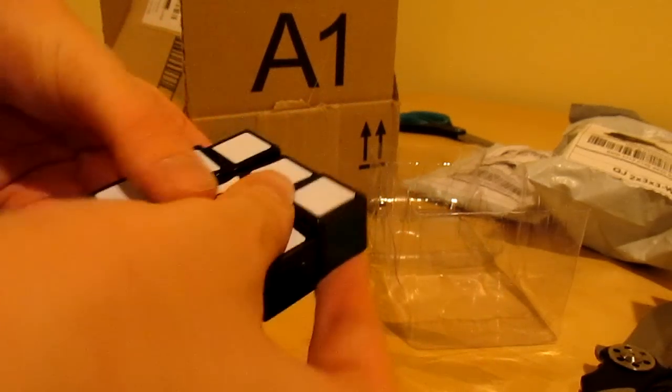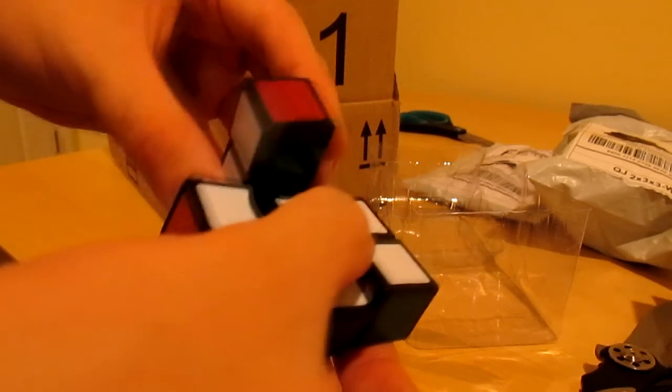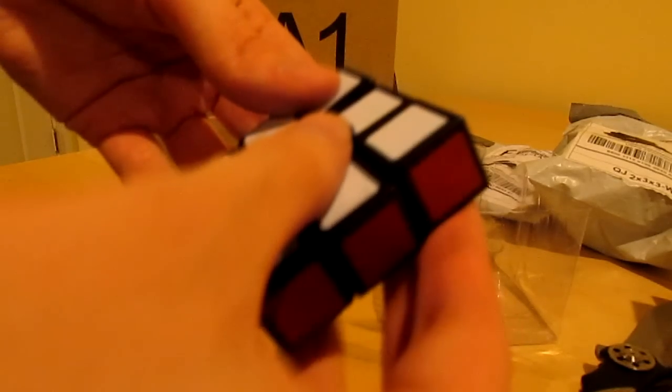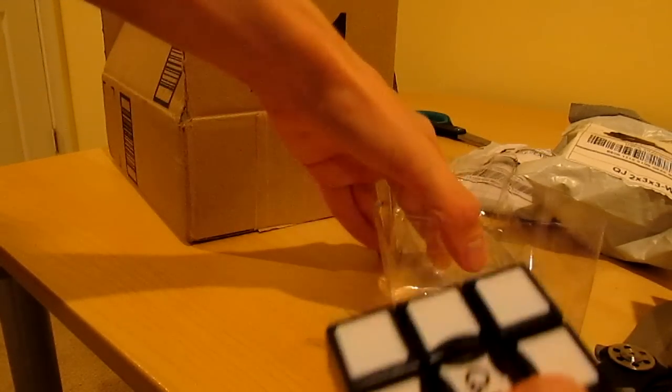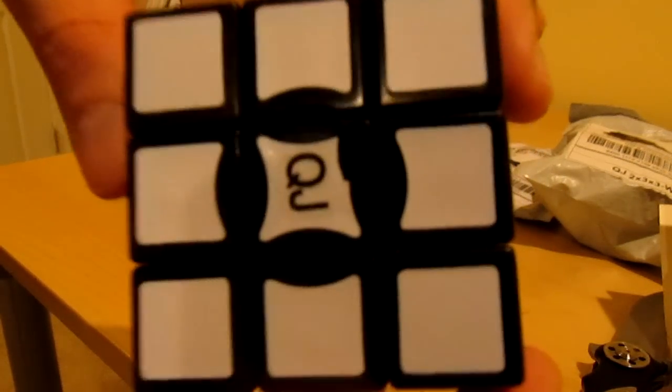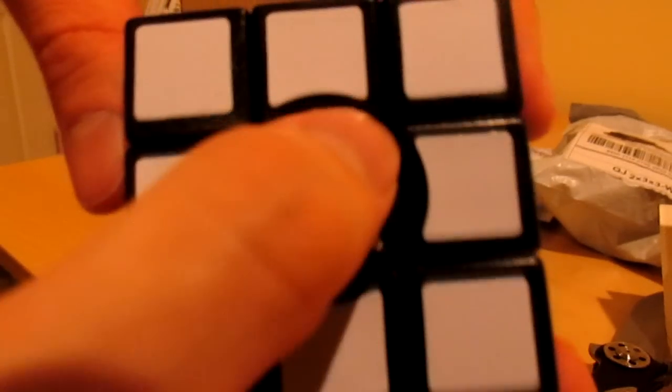So not sure if we can lube that, I don't think we can, but oh well. Okay, so that was the QJ. It moves pretty fragile obviously, but seems like it's solvable. So there's the QJ one by three by three, also known as the floppy cube. You can see the QJ logo there with a little thing there.